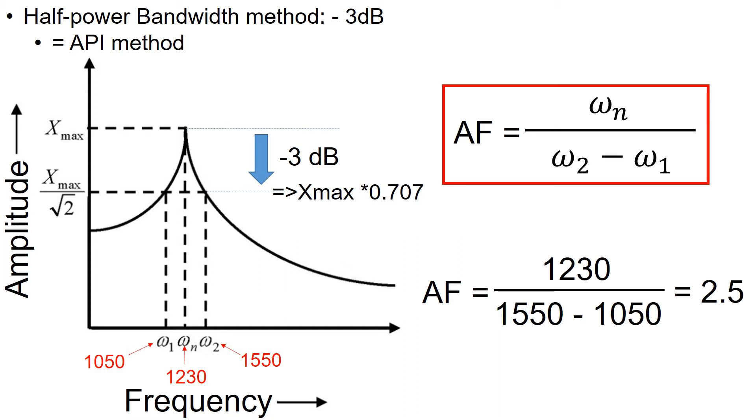The amplification factor is estimated based on the equations shown on the right. To calculate the amplification factor, you first need to find the natural frequency at the peak amplitude, which is ωn. For example purposes, the ωn at the peak amplitude is set as 1230 hertz.